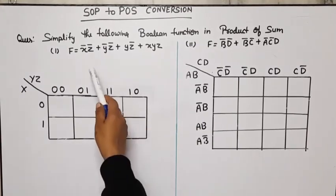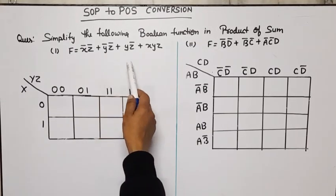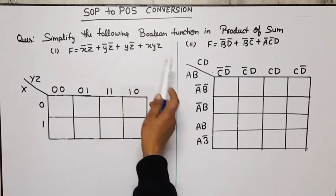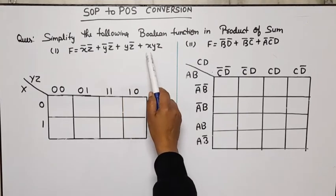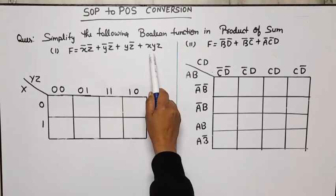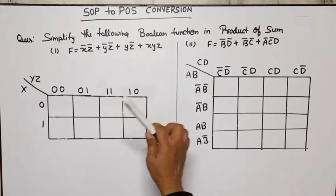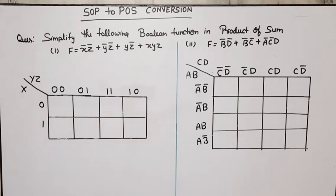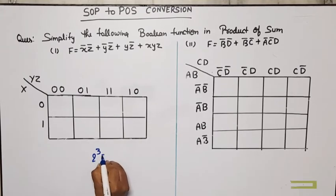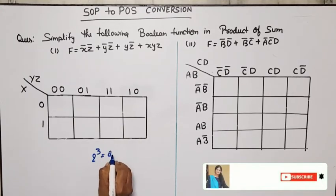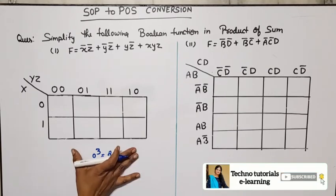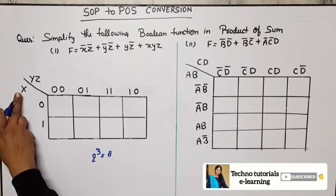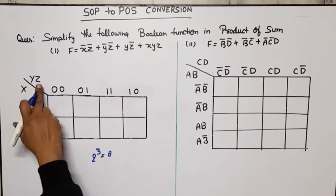The first example is f = x̄z̄ + ȳz̄ + yz̄ + xyz. We have three variables x, y, z, meaning 2 raised to power 3 equals 8 possible combinations. So we will use a three-variable K-map.